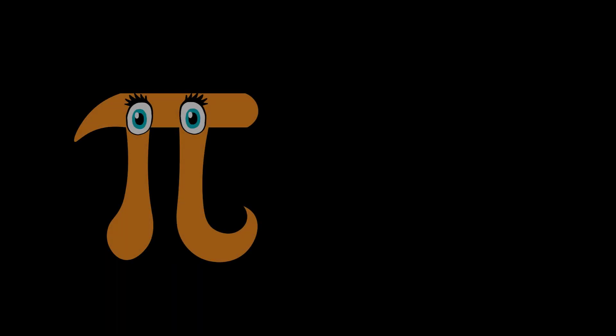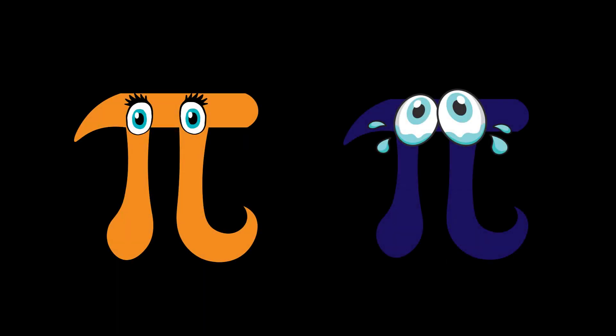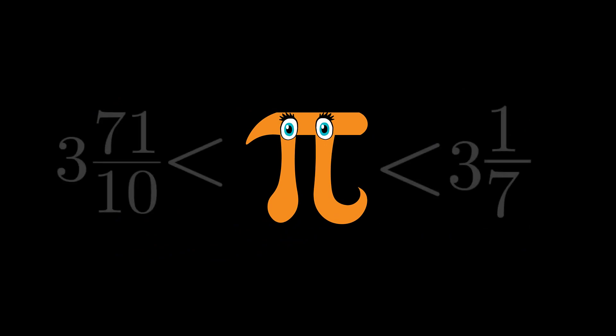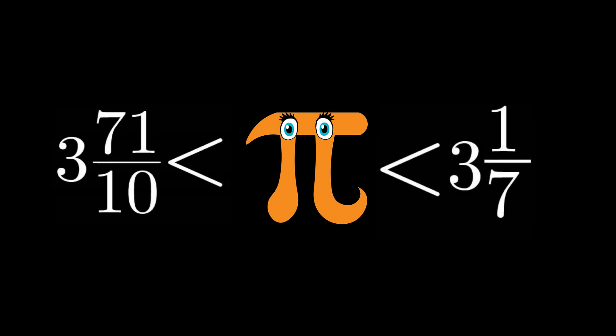The ancients used a variety of values for the number Pi. Some good, some bad. A result which has a modern flavour is one given by Archimedes. He was able to provide this nice lower and upper bound for the value of Pi.